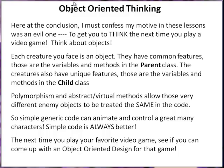Object-oriented thinking: my motive in these lessons was to get you to think the next time you play a video game. Each creature you face is an object. They have common features — those are the variables and methods in the parent class — and unique features, which are the variables and methods in the child class. Polymorphism and abstract or virtual methods allow very different enemy objects to be treated the same in the code, so simple generic code can animate and control a great many characters. Simple code is always better. See if you can come up with an object-oriented design for your favorite video game.